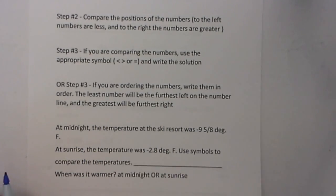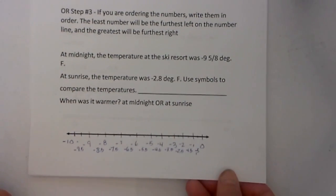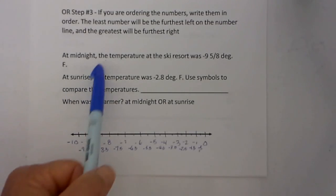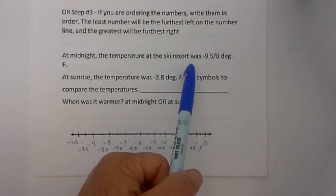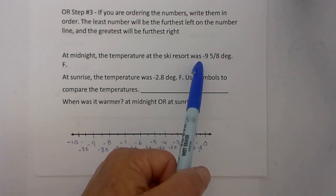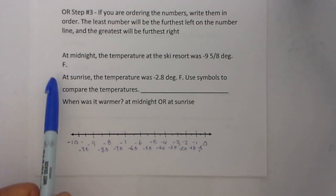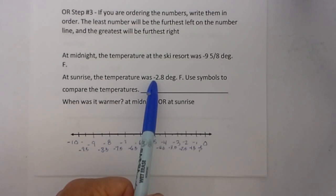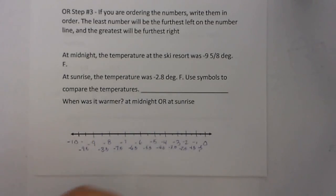Let's work an example and apply these rules. I went ahead and created a little number line to speed things up. It says at midnight the temperature at the ski resort was negative 9 and 5 eighths degrees Fahrenheit. At sunrise, the temperature was negative 2.8 degrees Fahrenheit. Use symbols to compare the temperatures. Was it warmer at midnight or at sunrise?